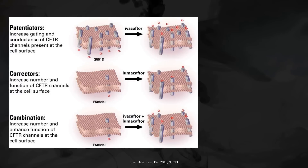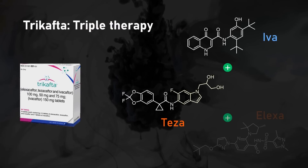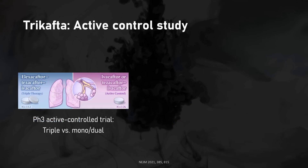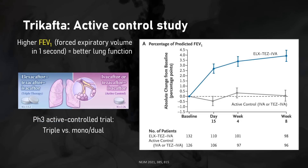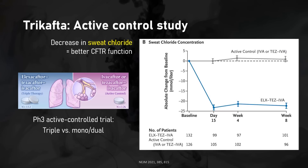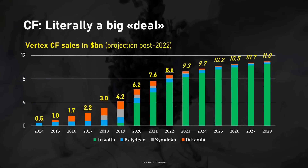Because potentiators and correctors have different mechanisms, the best approach is to combine them. The triple combo resulted in Trikafta, Vertex's most recently launched brand, usable in patients with at least one phenylalanine deletion mutation — around 90% of patients. A large phase 3 clinical trial showed significant benefit in forced expiratory volume and decreased chloride concentration in sweat, a measure of CFTR dysfunction. Real-world data has now shown the drug leads to around 75% reduction in risk of death.